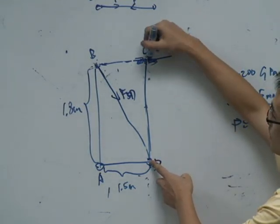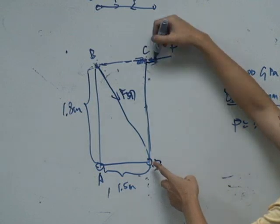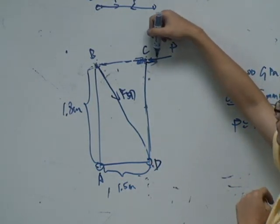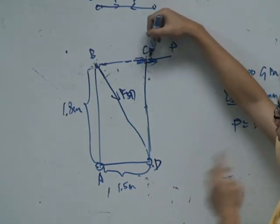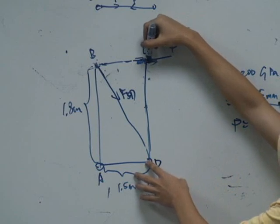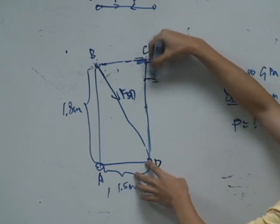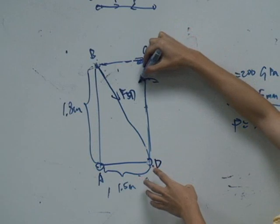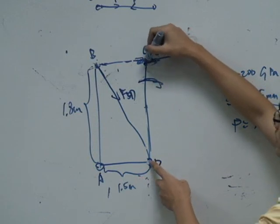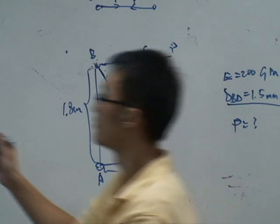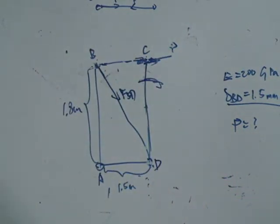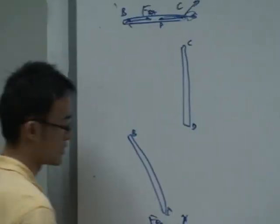Why? Because if it is not zero, look at this two-force member. If it is not zero, what will happen for this one? It will rotate, right? If it is in this direction, it will result in the rotating of this number.